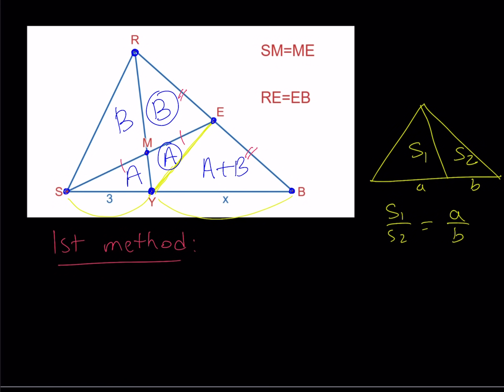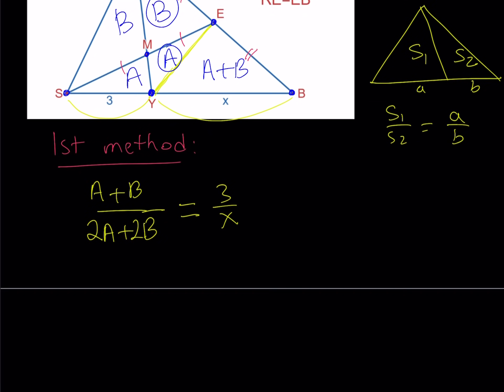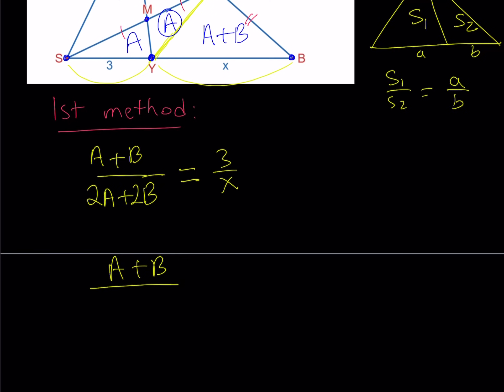So now, looking at the big picture, I noticed that the area of SRY is A plus B. So I'm going to compare that to the area of RYB, and that is going to be 2A plus 2B. And that ratio is equal to 3 over X. But notice that we can take out a 2 here and simplify this, and this gives me 1 half. So from here I get X equals 6, and X is what I was looking for. X is the unknown. Great. So this concludes the first method.